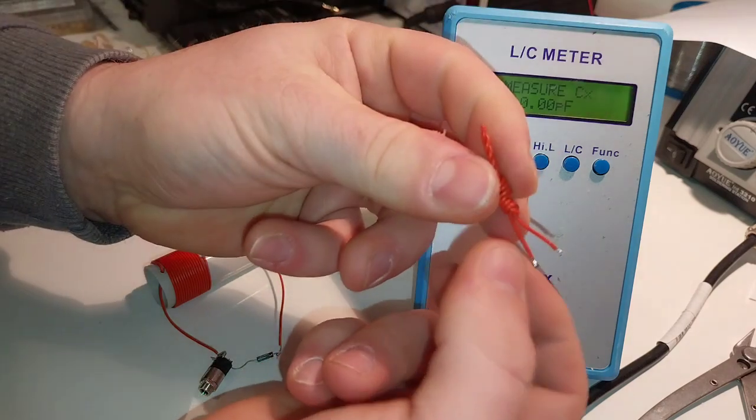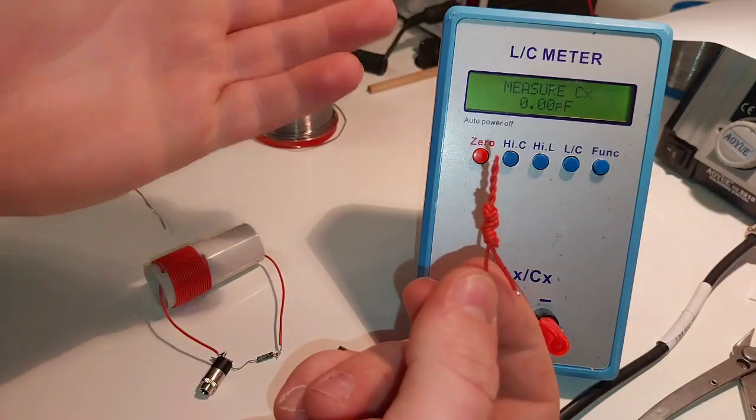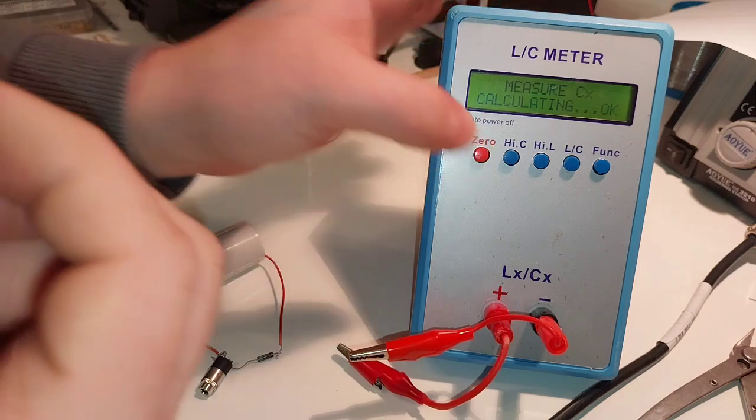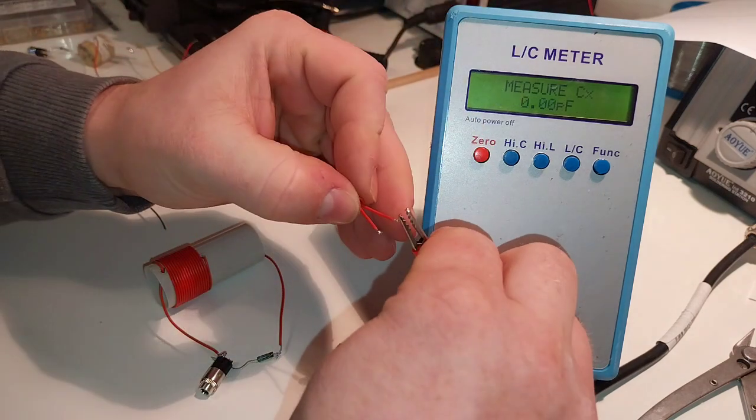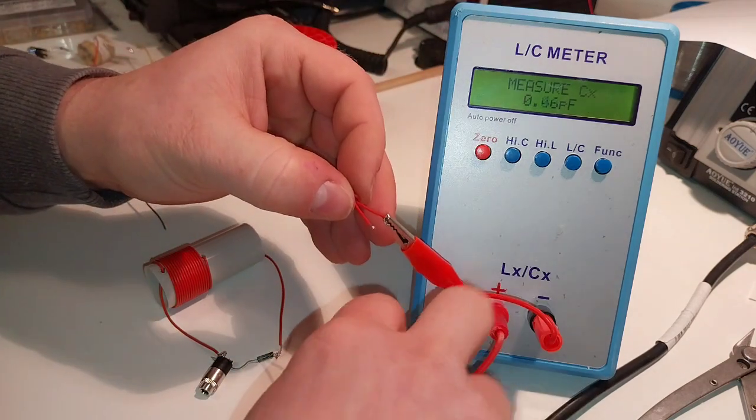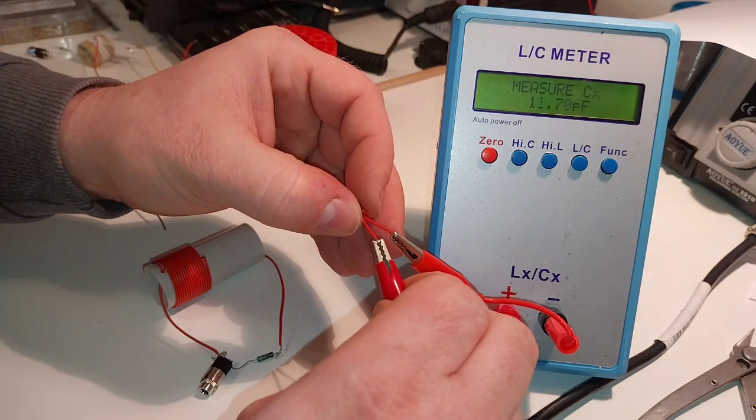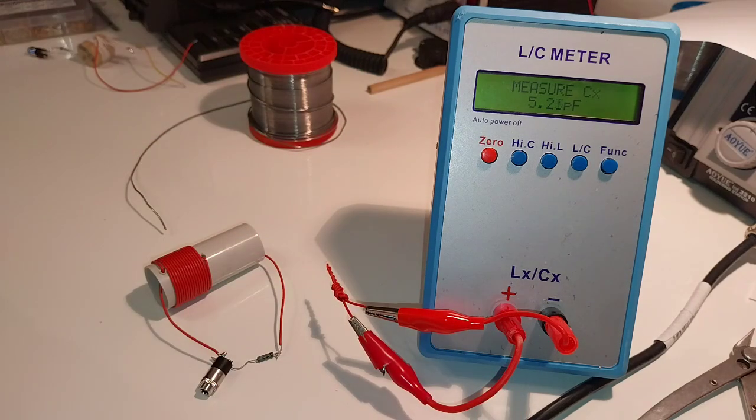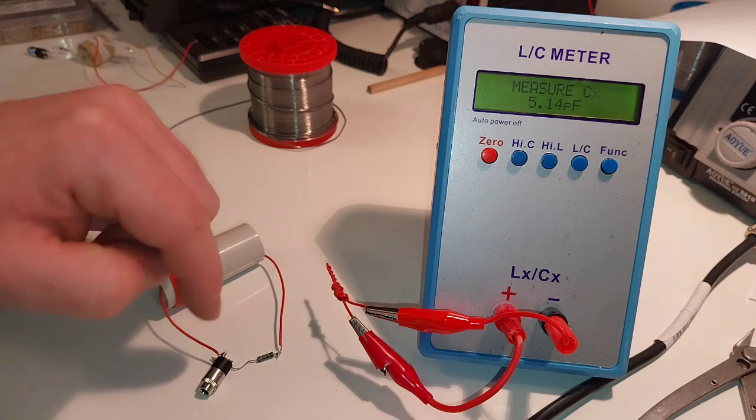So that's our capacitor, three knots and the rest is twisted here. So we want to reach about five picofarad. Let's see. Perfect, five point two approximately, so I will add this now to the circuit here.